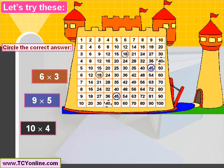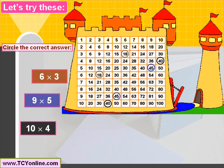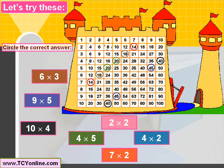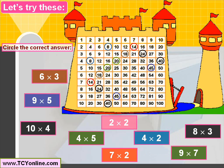Next, 10 times 4 — move by the 10th column and 4th row, or by the 10th row and 4th column, and we get 40. Similarly, 4 times 5 gives 20, 2 times 2 gives 4, 7 times 2 gives 14, 4 times 2 gives 8, 8 times 3 gives 24, and 9 times 7 gives 63.